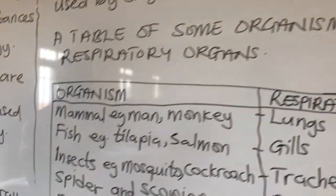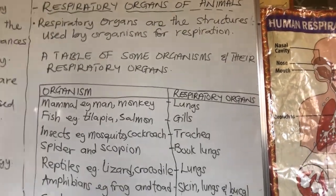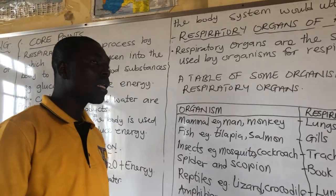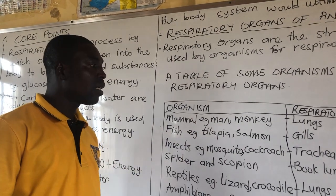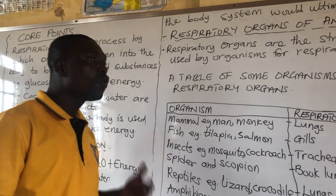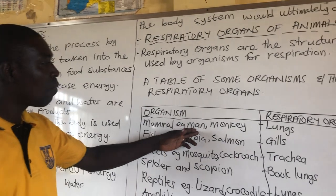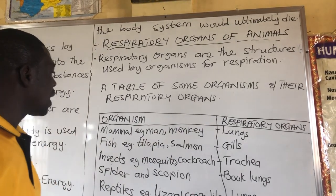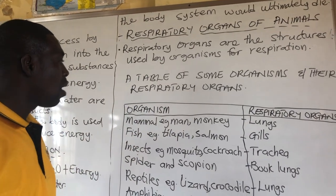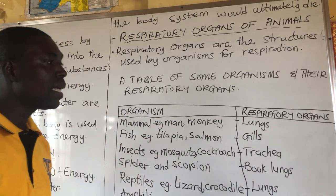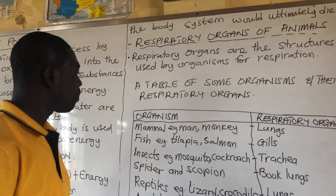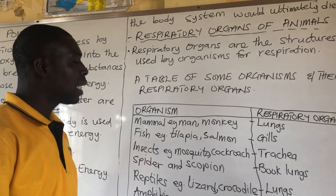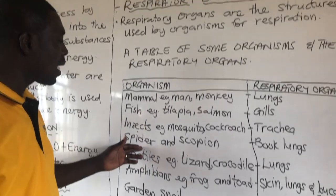Now let's look at some organisms and their respiratory organs — the organs they use to exchange gases. Mammals are organisms that give birth alive to babies; for example, man and monkeys. They use the lungs to exchange gases. Fish, for example tilapia and salmon, use the gills to exchange gases. Insects, for example mosquito and cockroach, use the trachea for respiration. Spiders and scorpions use what we call book lungs to exchange gases. Reptiles such as lizard and crocodile also use lungs for respiration.